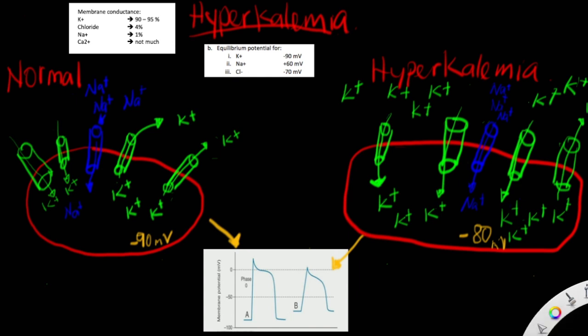In the case of hyperkalemia, there is an increase in the level of potassium in the blood, which means an increase in the level of potassium outside of the cell. So now the chemical gradient for potassium has been changed, and that change causes a change in the resting membrane potential. The chemical equilibrium for potassium ions has been disrupted, with more potassium ions outside of the cell.